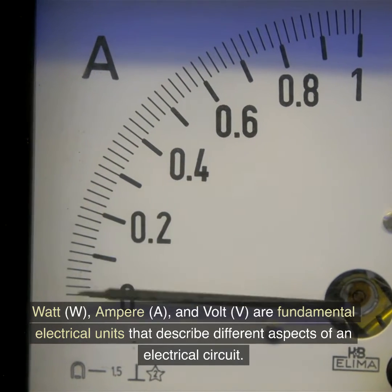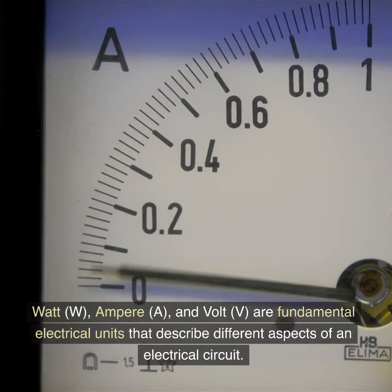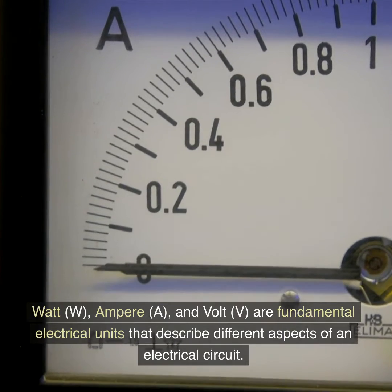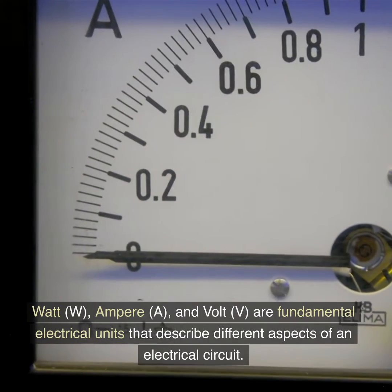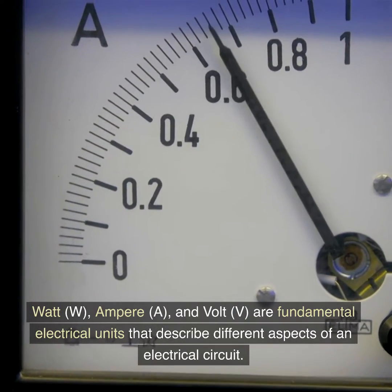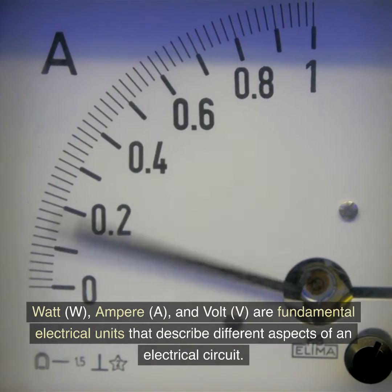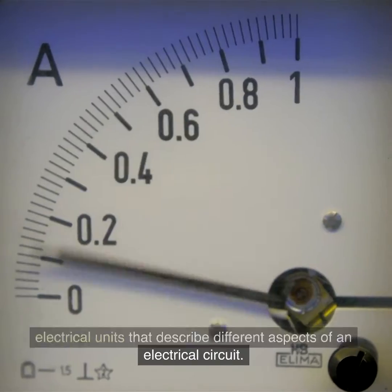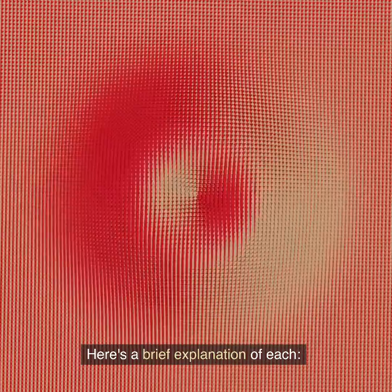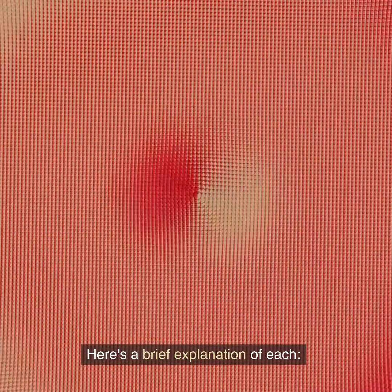Watt (W), Ampere (A), and Volt (V) are fundamental electrical units that describe different aspects of an electrical circuit. Here's a brief explanation of each.